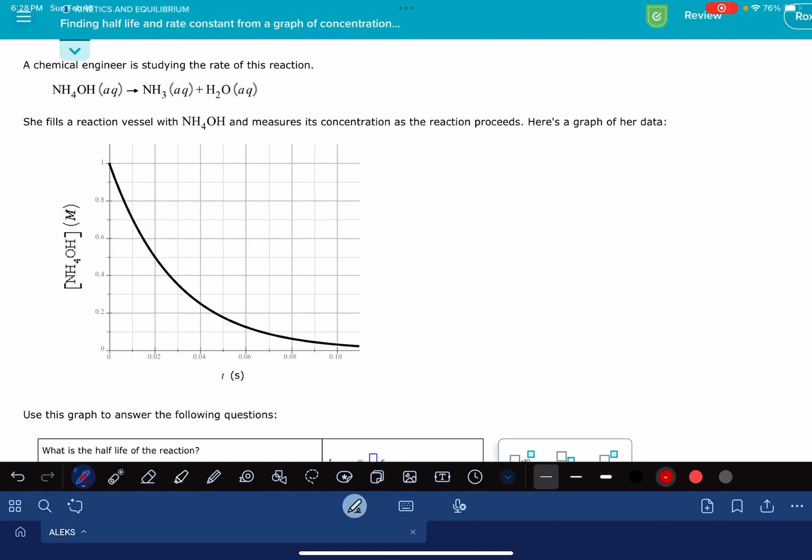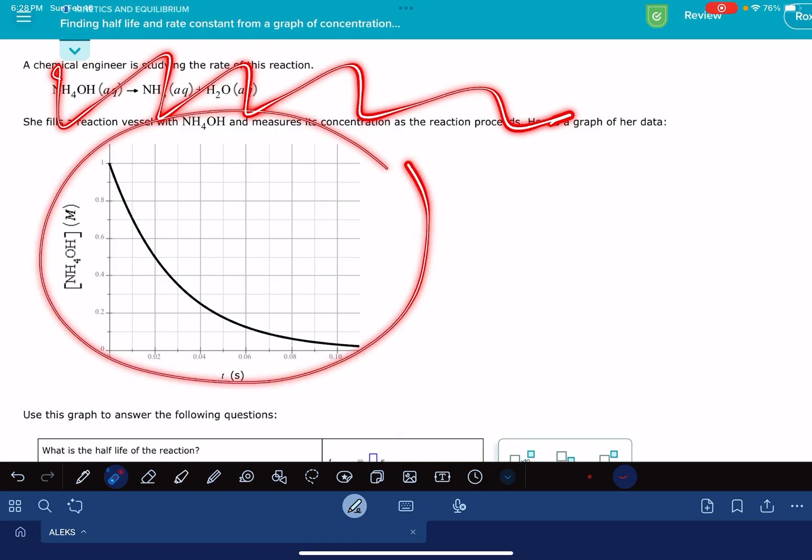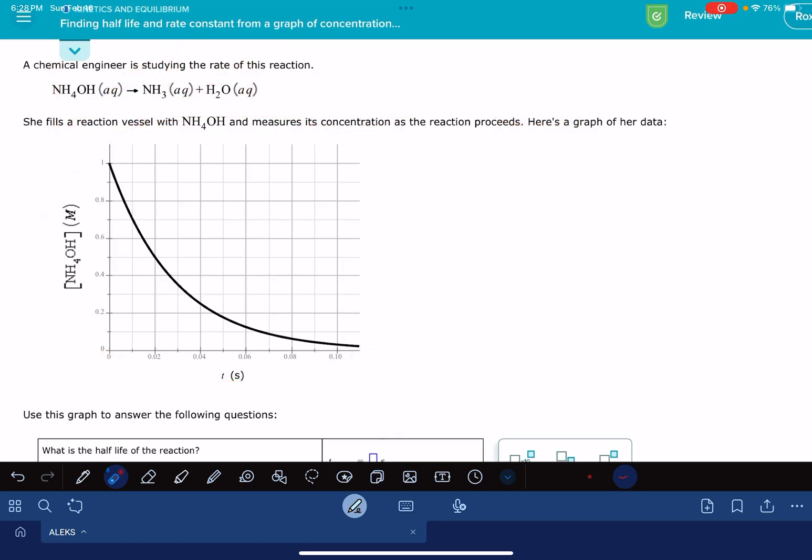In this video, I'll show you how to solve the ALEKS problem called finding half-life and rate constant from a graph of concentration versus time. This problem might look pretty intimidating, but it's actually pretty straightforward. We have a graph, a chemical reaction which we're going to ignore, a graph that we're going to pay attention to, and we just have three questions to answer about the data in this graph.